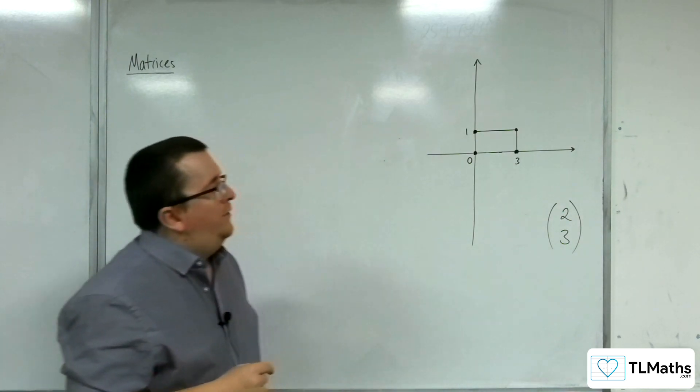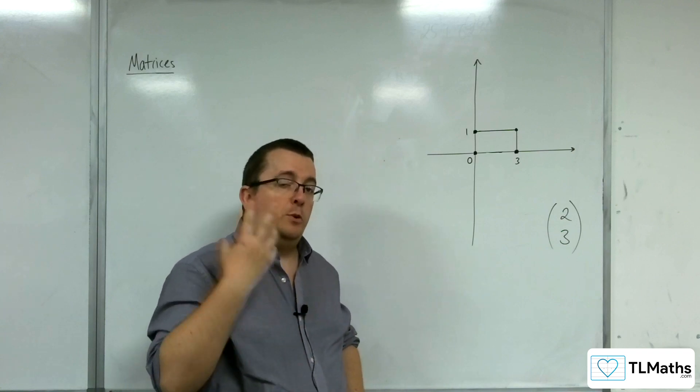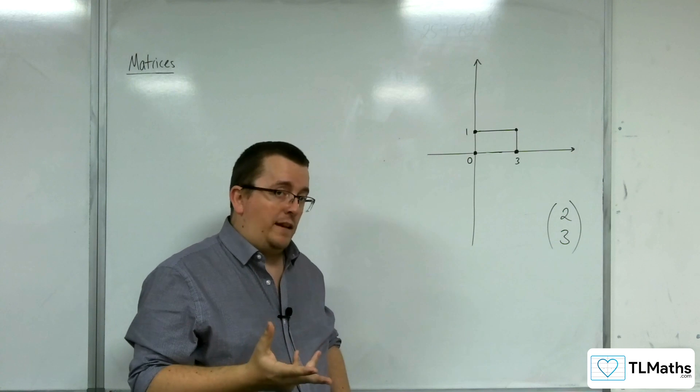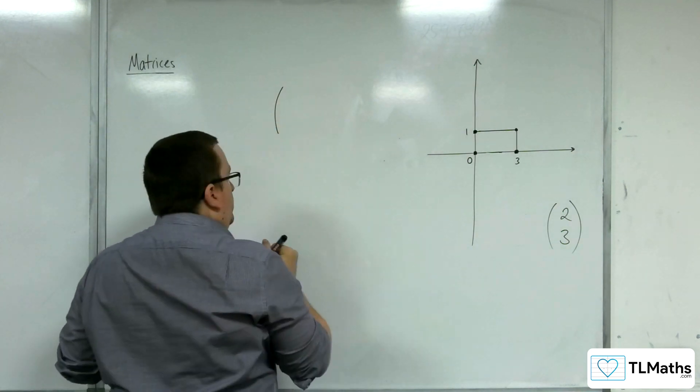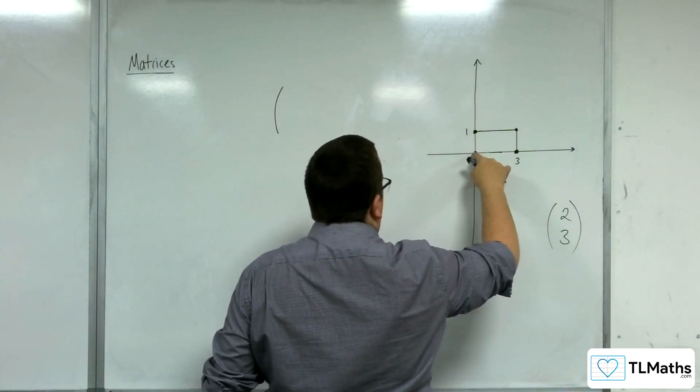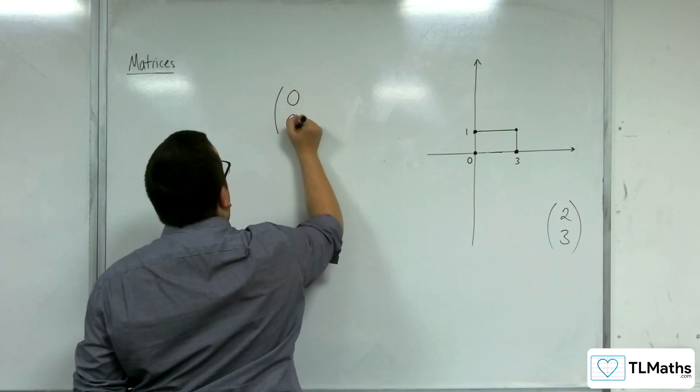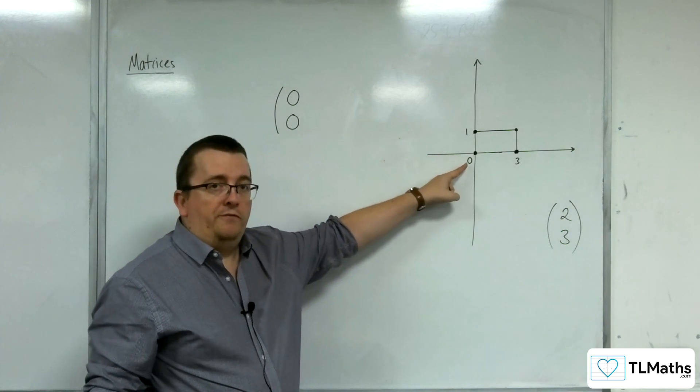So the idea here is that I'm going to describe how I can get from 0, 0 to each of the corners of this rectangle. So I've got this point here, 0, 0. So how do I get from 0, 0 to 0, 0? Well, I go 0 along and then 0 up. So 0, 0 are the coordinates of that point.